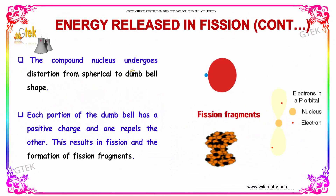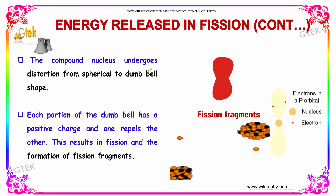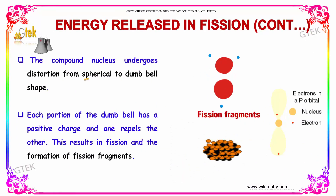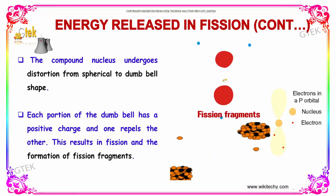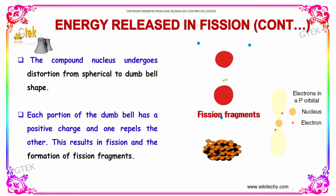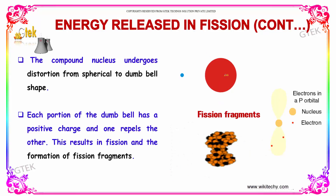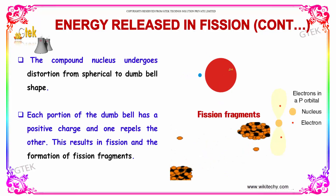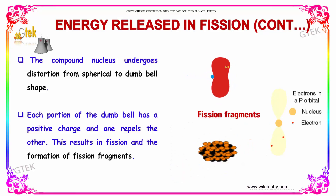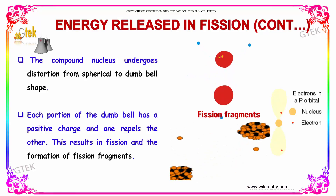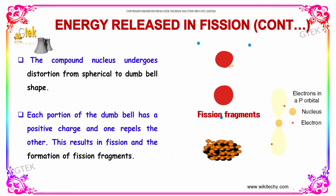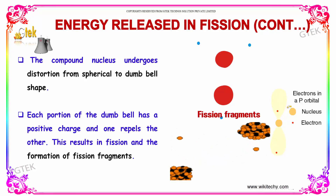The compound nucleus undergoes a distortion from spherical to dumbbell shape. Each portion of the dumbbell shape has a positive charge and repels the other, resulting in fission and the formation of fission fragments.